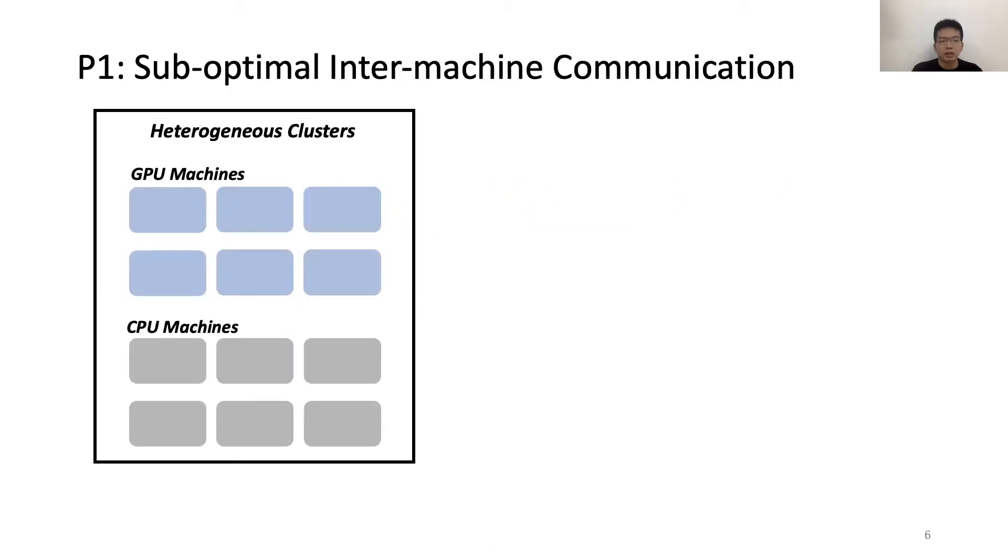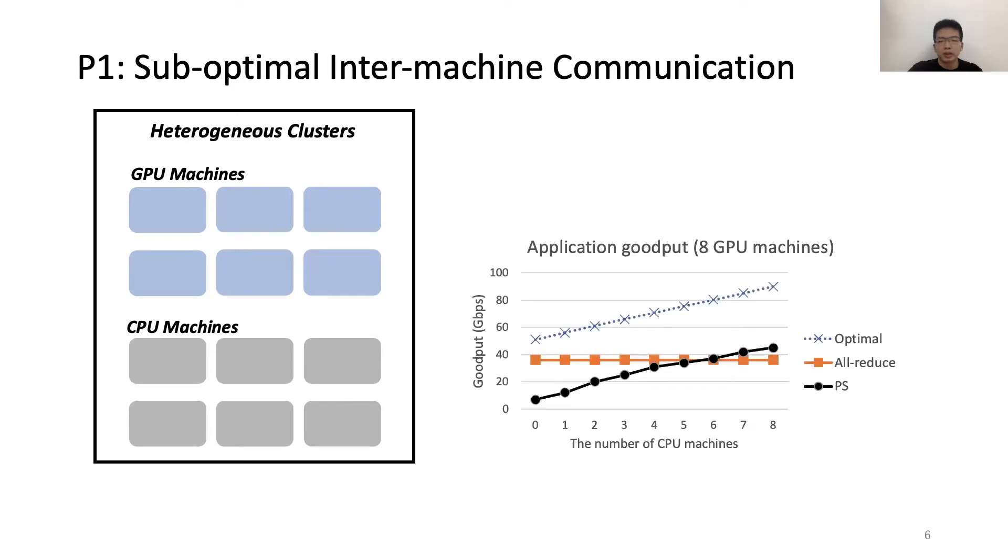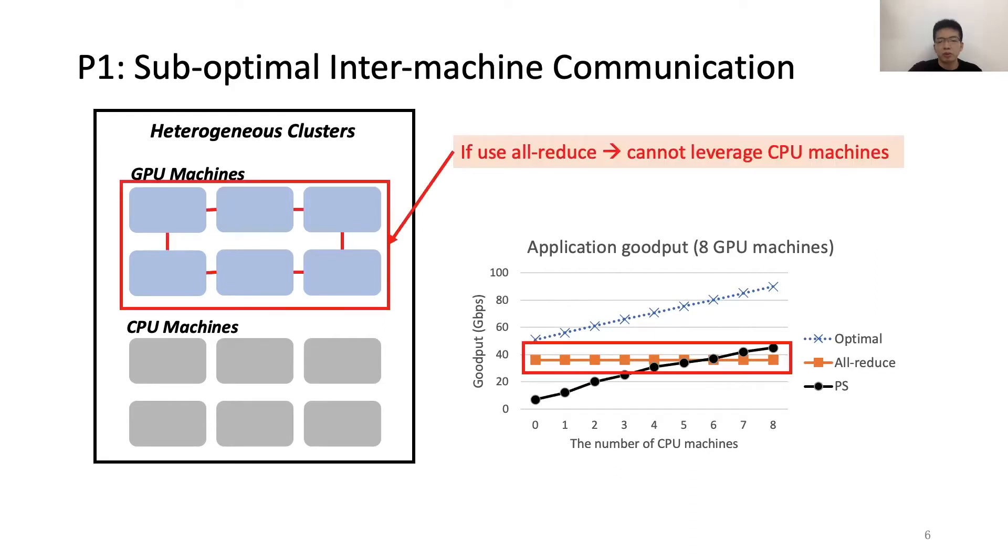Problem one is the suboptimal inter-machine communication. We focus on DNN training in heterogeneous clusters with GPUs and CPUs, but all-reduce and PS fail to leverage the heterogeneous resources efficiently. For example, if we use all-reduce for training, you cannot leverage CPU machines because it is a homogeneous architecture. As shown in this figure, no matter how much the number of CPU machines change, the all-reduce plot is always flat.